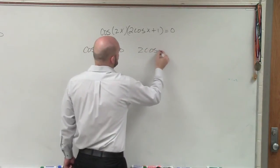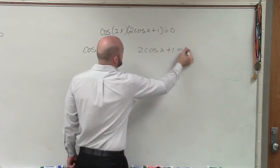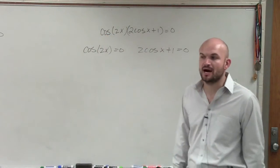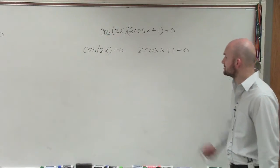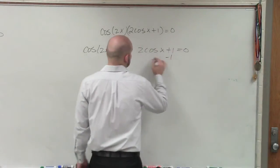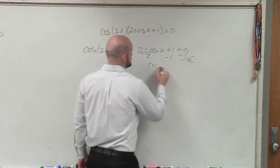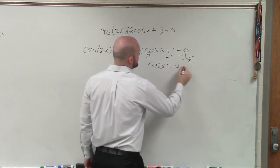and then 2 cosine of x plus 1 equals 0. Now we're trying to find all the solutions. So we are going to be using our plus 2 pi or plus pi or whatever else is going to be the case. So here I can solve this and then divide by 2.